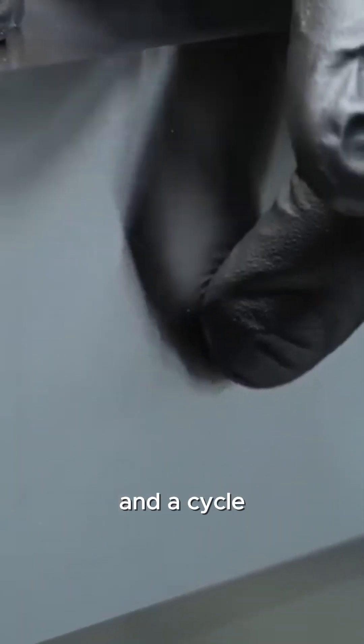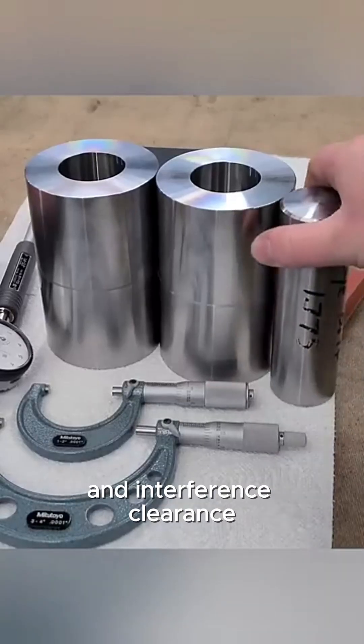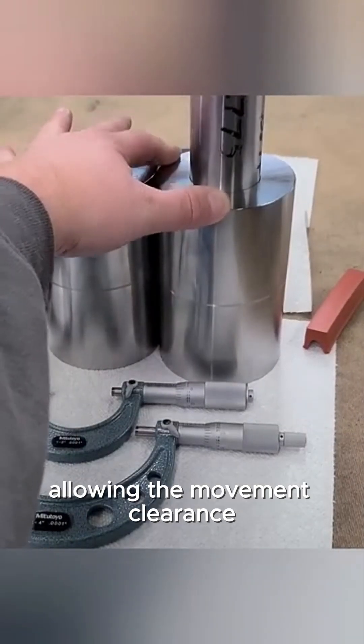ISO and ANSI categorize these fits into three different types: clearance, transition, and interference. A clearance fit ensures that the hole is always larger than the shaft, allowing movement.